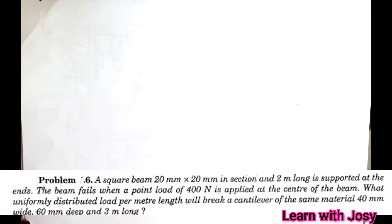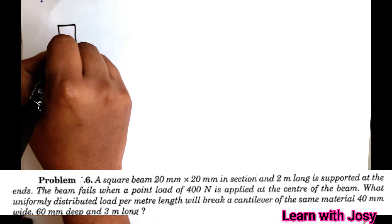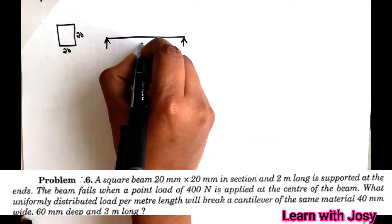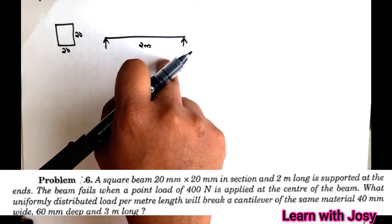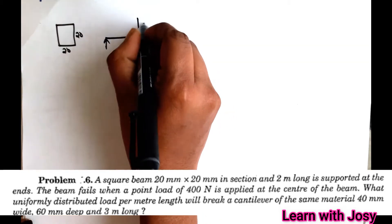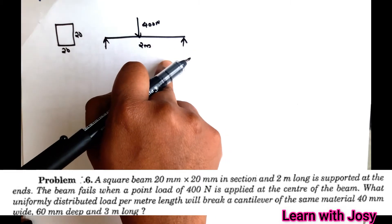A square beam 20 mm by 20 mm in section and 2 meters long is supported at the ends. The beam fails when a point load of 400 N is applied at the center of the beam. This is the first case.